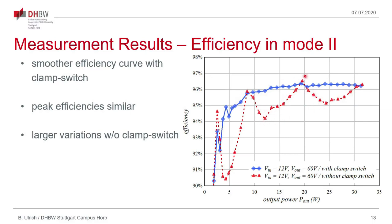We can see the peak efficiencies are almost the same for both cases. But the blue curve is much smoother than the red curve where we have large variations in efficiencies. These are due to the fact that in a converter without a clamp switch we will turn on the transistor at varying drain to source voltages. Sometimes at a higher drain to source voltage and sometimes at a lower drain to source voltage where we have zero voltage switching. And therefore we get variation in the switching losses.